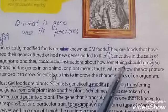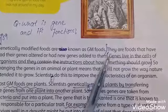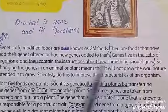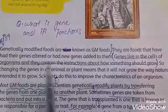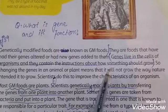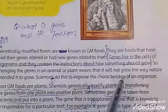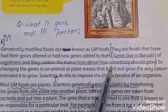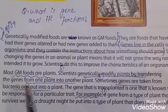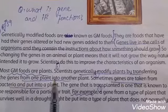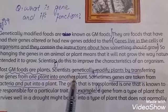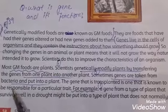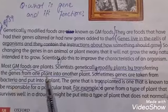The first question: what is a gene? A gene lives in the cells of organisms and contains all the genetic information. Dear students, most GM foods are plants. For example, scientists genetically modify plants by transferring the gene of one plant into another.